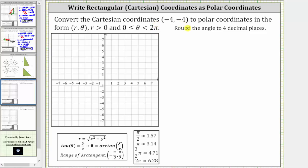Let's first plot the point on the coordinate plane. From the origin, we move left four units and then down four units. This is the point we want to write using polar coordinates.